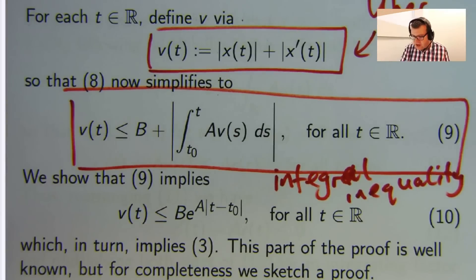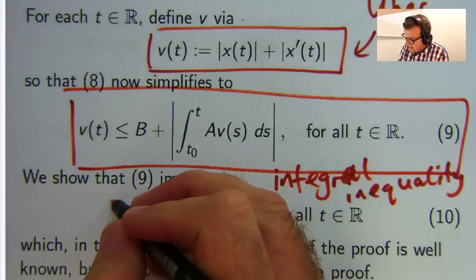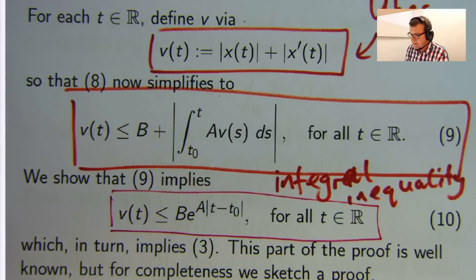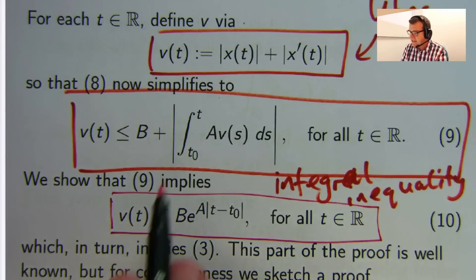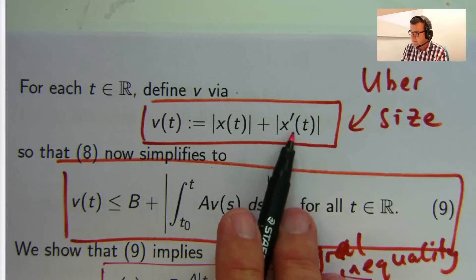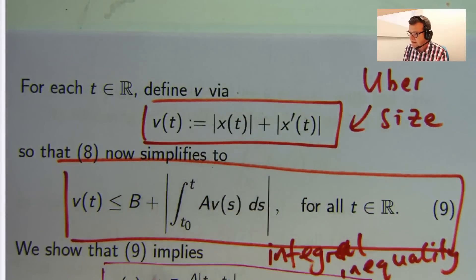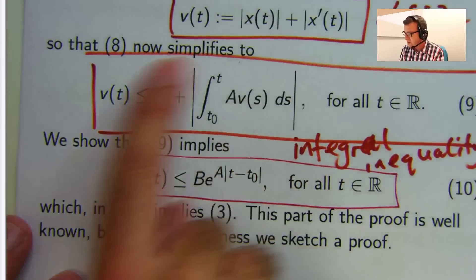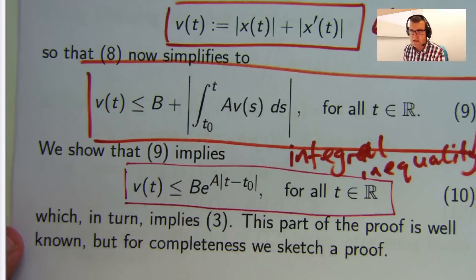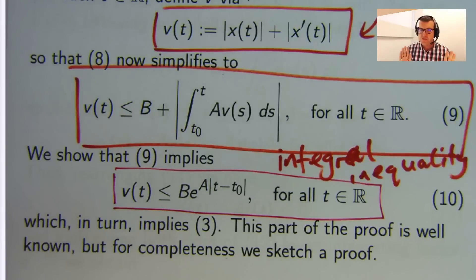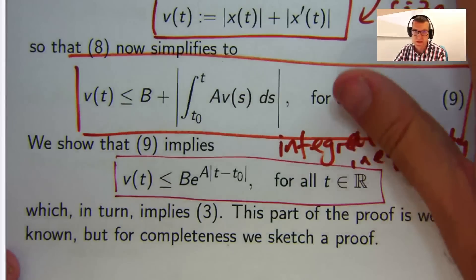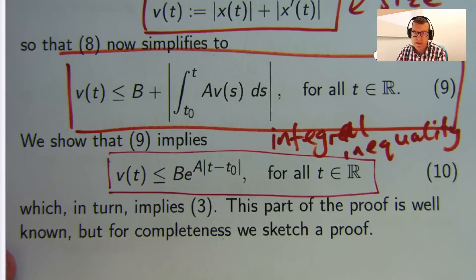Now from (9), you can show that actually v satisfies this exponential bound. And if that's the case, because v is this plus this, each of these guys have got to satisfy the same bound. So that's kind of how it works. That's kind of where we're going here. So how do we go from (9) to (10)? Well, it's well known, the proof is very well known, but let me just show it to you. We're only going to prove one case, not going to do the whole thing.